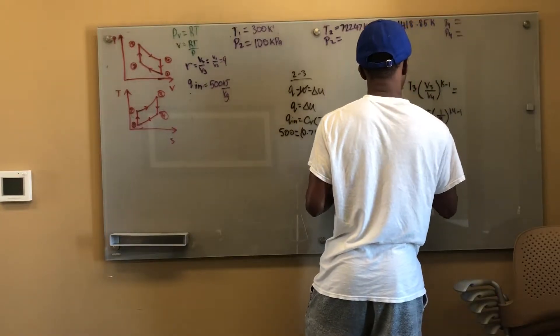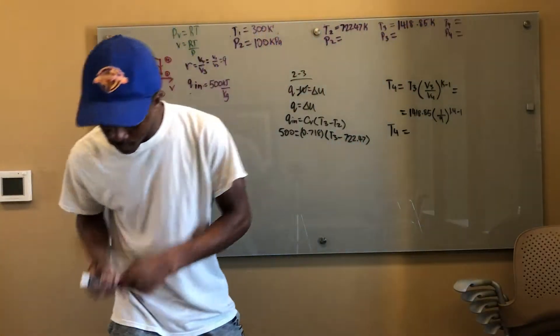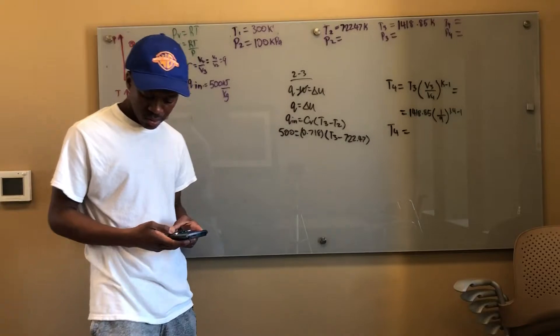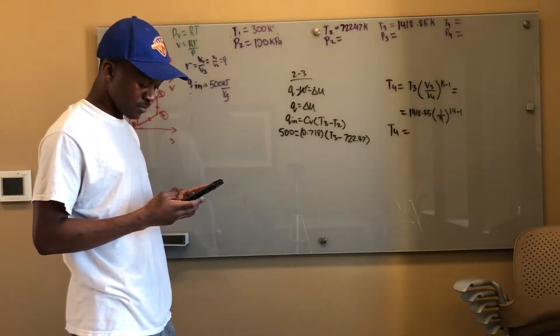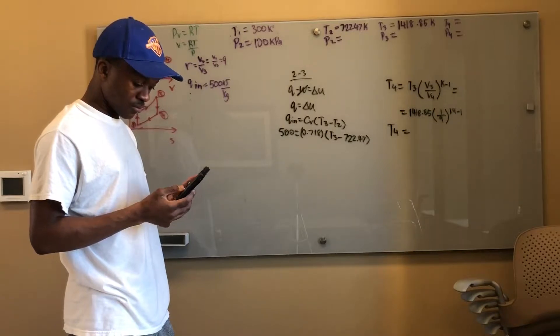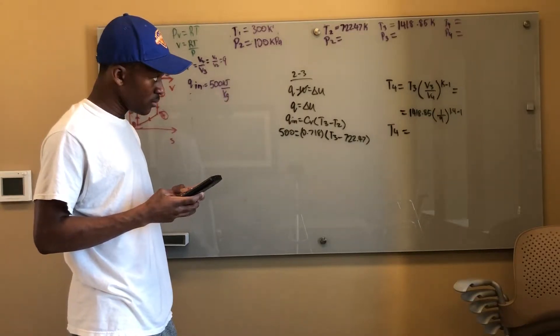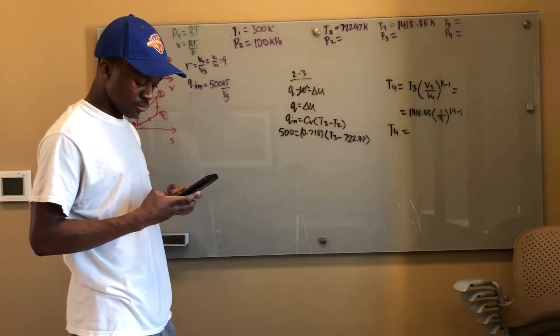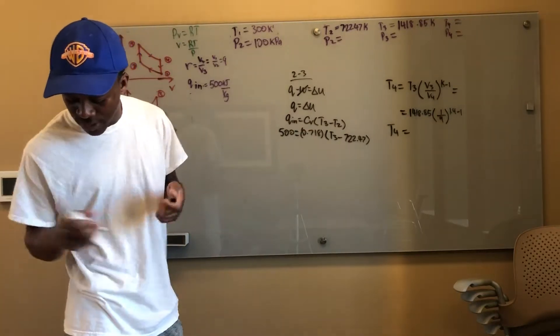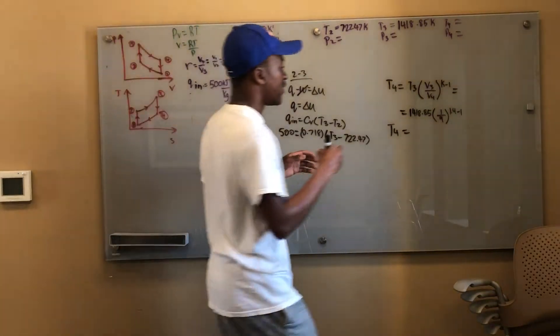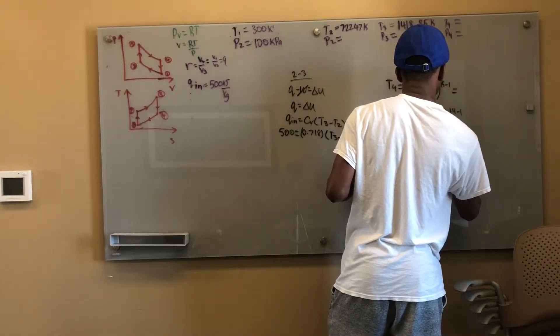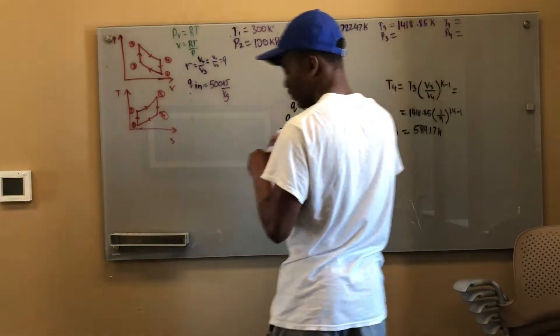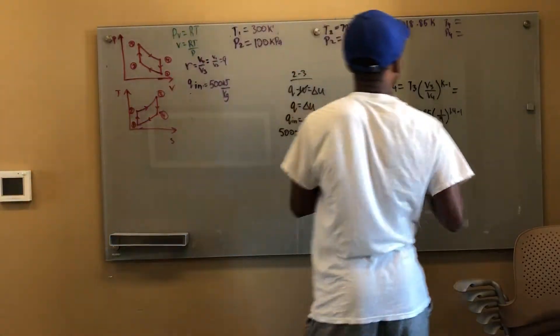So T3 is equal to 1418.85 times 1 over 9 to the 1.4 minus 1. T4 equals 589.17 Kelvin.